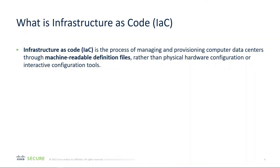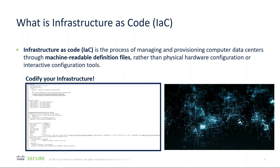Infrastructure as code is the process of managing and provisioning computer data centers through machine-readable definition files, rather than physical hardware configuration or interactive configuration tools. At one point we moved firewalls to a web GUI, but now we've come full circle to a programmatic way of configuring infrastructure — essentially codifying everything from an infrastructure perspective.